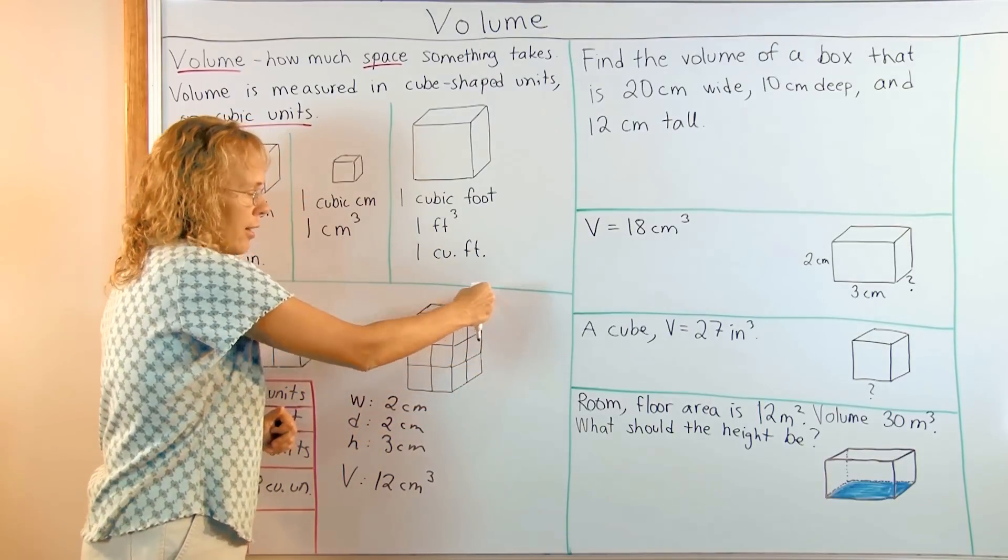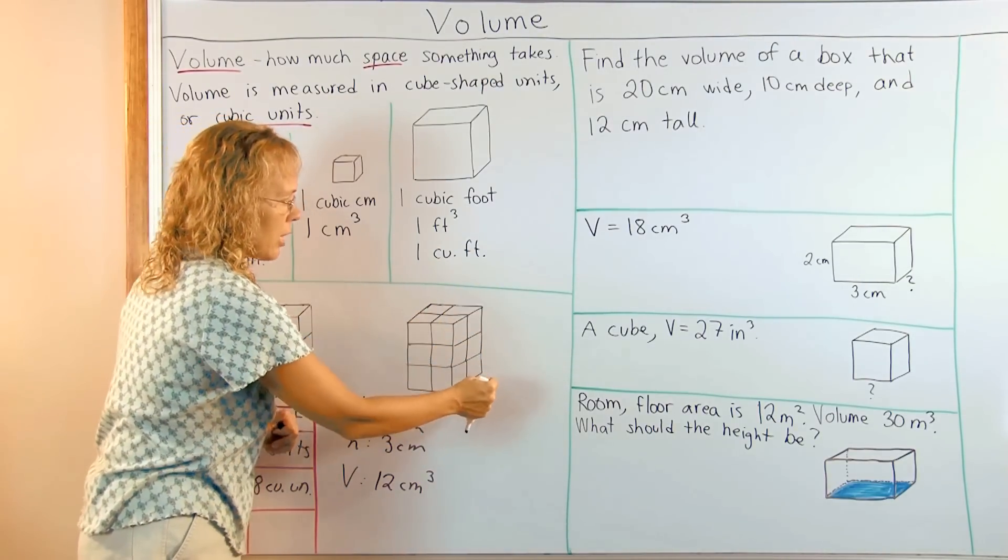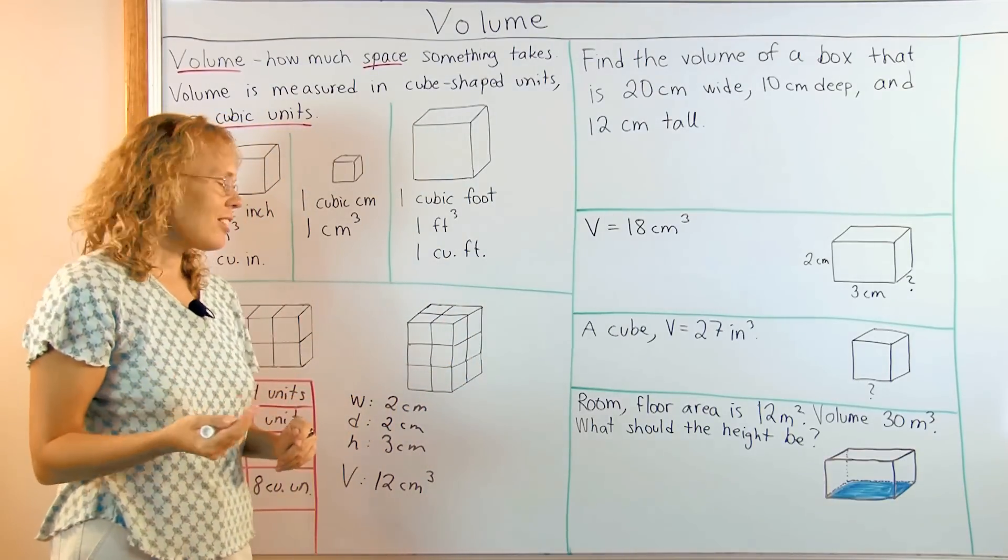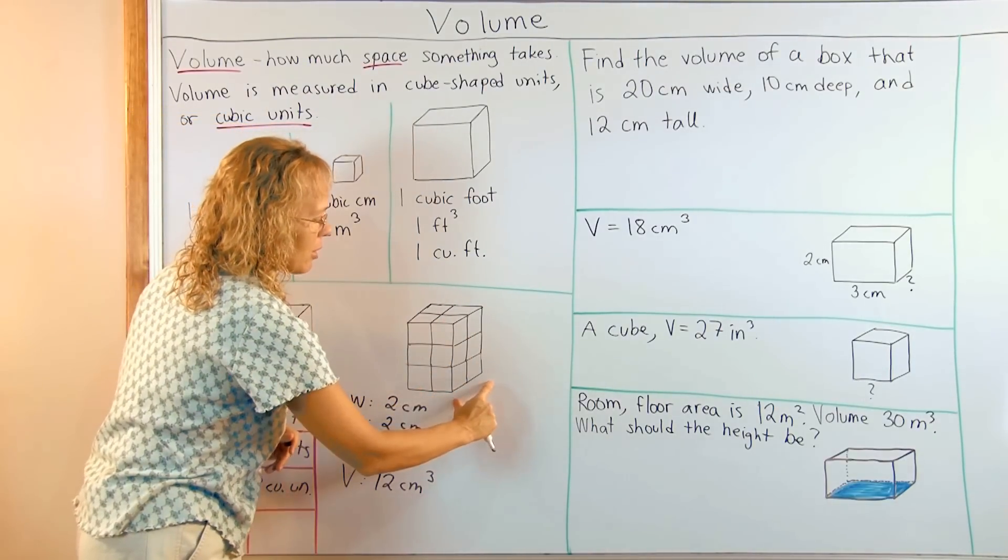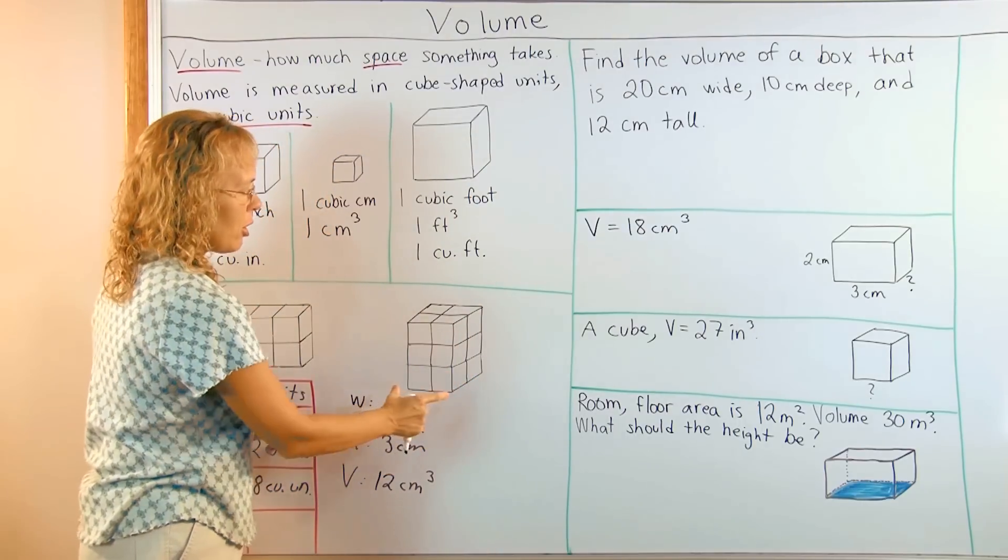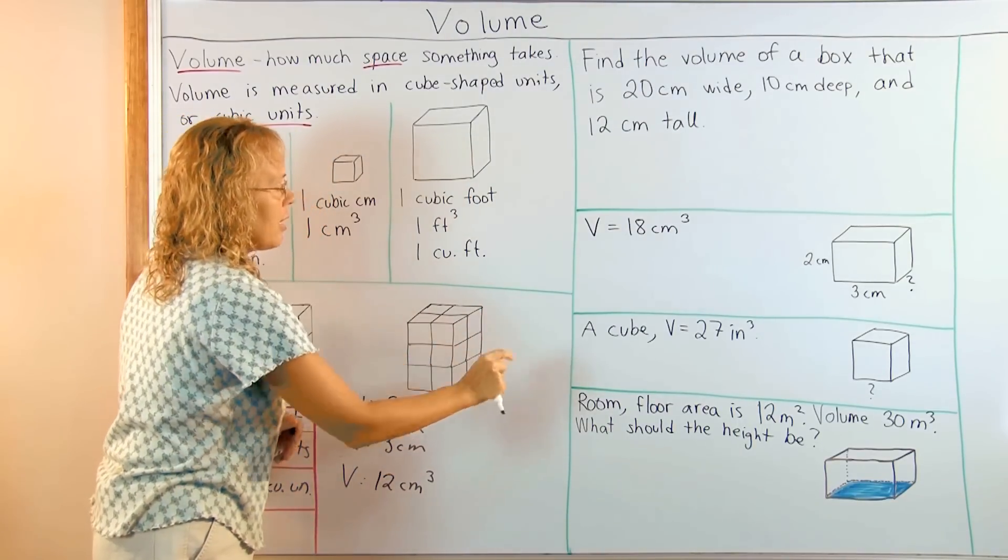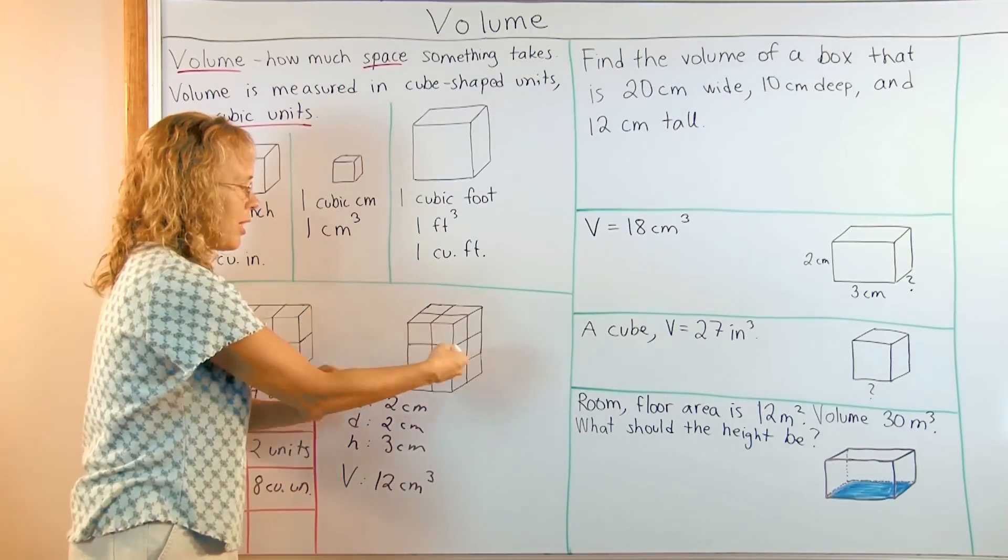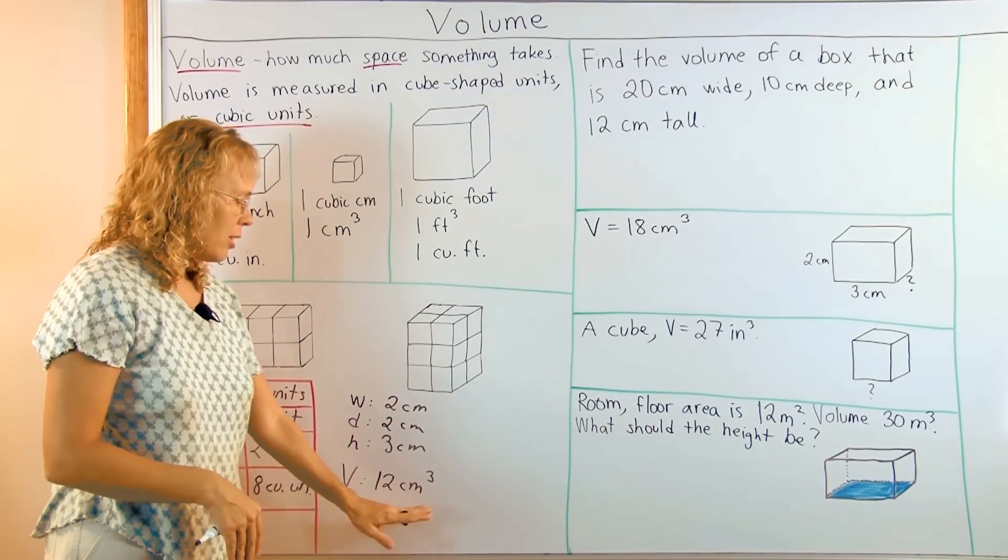And then you'd think of how many layers high it is in blocks. There's actually three levels, three layers or three levels. So we go four times three. The blocks on the bottom times how many layers you have. Four times three equals twelve. So there's twelve cubes here. And the volume is twelve cubic centimeters.